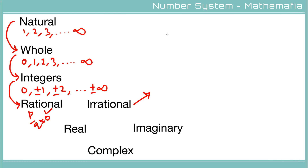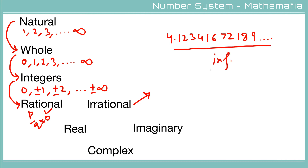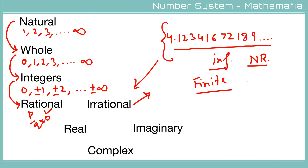Now let's talk about irrational numbers. Consider a decimal number where the decimal portion is like 1, 2, 3, 4, 1, 6, 7, 2, 1, 8, 9... — meaning the decimal portion is infinite and non-repeating. Such numbers are called irrational numbers. Square root of 2, square root of 3, square root of 5, and pi are the best examples of irrational numbers. In rational numbers, the decimal portion is either finite or infinite but repeating, whereas in irrational numbers the decimal portion is infinite and non-repeating.